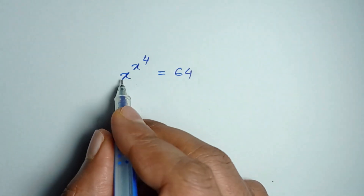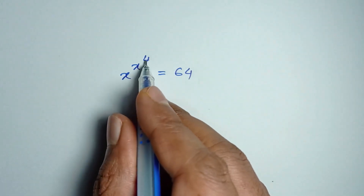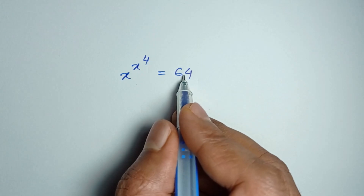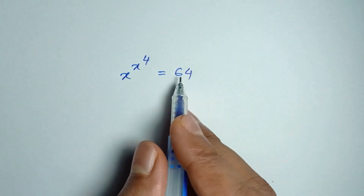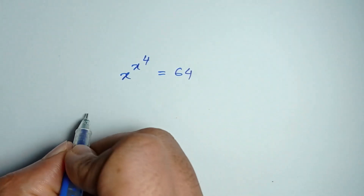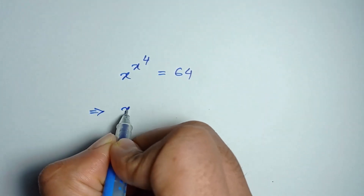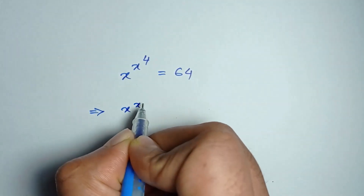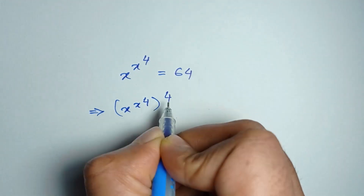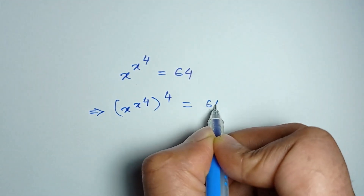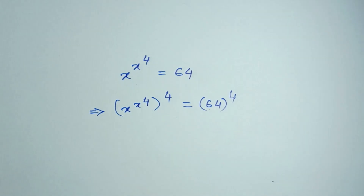Hi everyone, we have to solve x to the power x to the power 4 is equal to 64. If we take power 4 both sides, we get x to the power x to the power 4, whole to the power 4, is equal to 64 to the power 4.